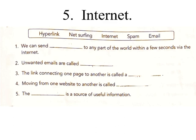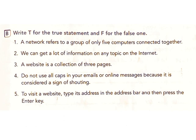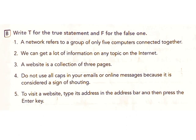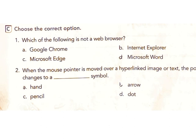Question 5: The internet is a source of useful information. Answer: internet. B. Write T for the true statement and F for the false. 1. A network refers to a group of only five computers connected together. Answer: False. 2. We can get a lot of information on any topic on the internet. Answer: True. 3. A website is a collection of three pages. Answer: False. 4. Do not use all caps in your emails or online messages because it is considered a sign of shouting. Answer: True. 5. To visit a website, type its address in the address bar and then press the Enter key. Answer: True.